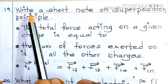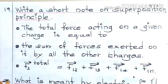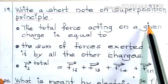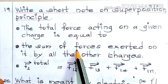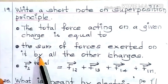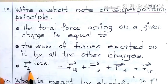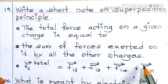Question number 19: Write a short note on superposition principle. Answer: The total force acting on a given charge is equal to the sum of forces exerted on it by all the other charges. F1 total is equal to F12 vector plus F13 vector plus F14 vector plus F1n vector.